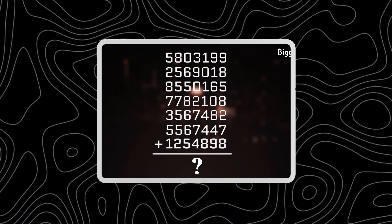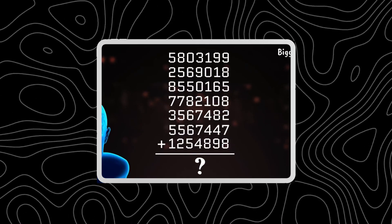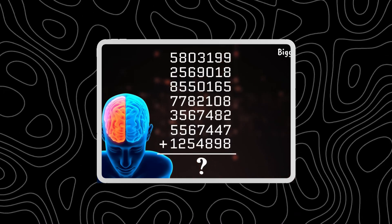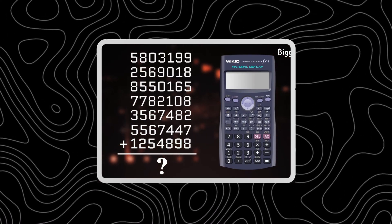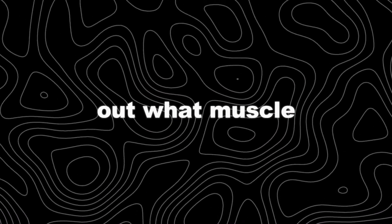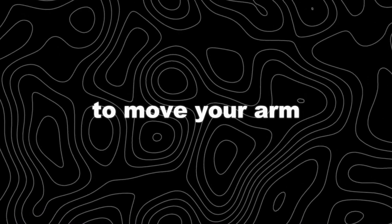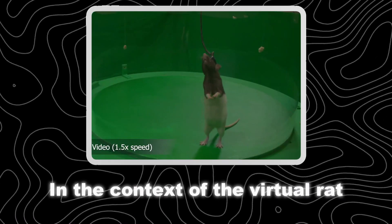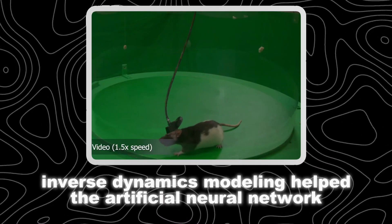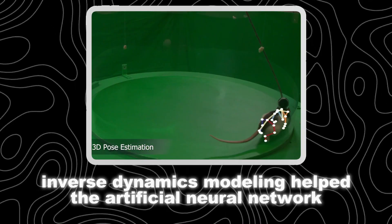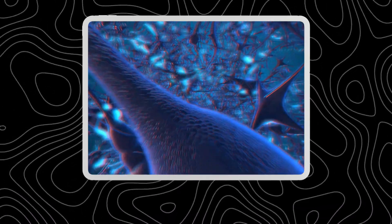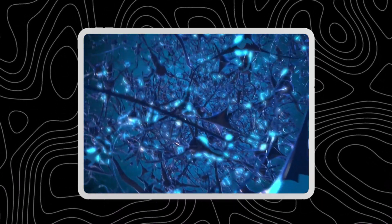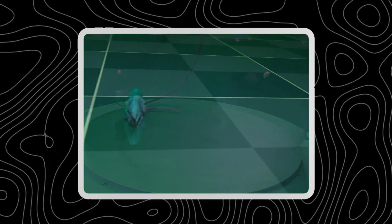The researchers used a method called inverse dynamics modeling. This method calculates the necessary forces and torques needed at various joints to produce a desired motion. It's like figuring out what muscle actions are required to move your arm to a specific position. In the context of the virtual rat, inverse dynamics modeling helped the artificial neural network learn how to generate precise movements. The neural network had to determine which muscle contractions and joint movements would result in the rat walking, running, or performing other tasks.